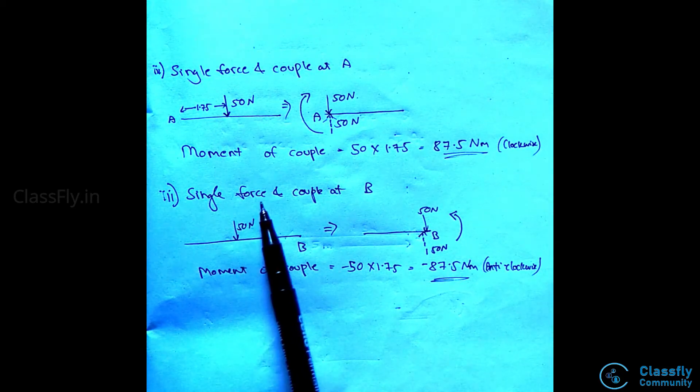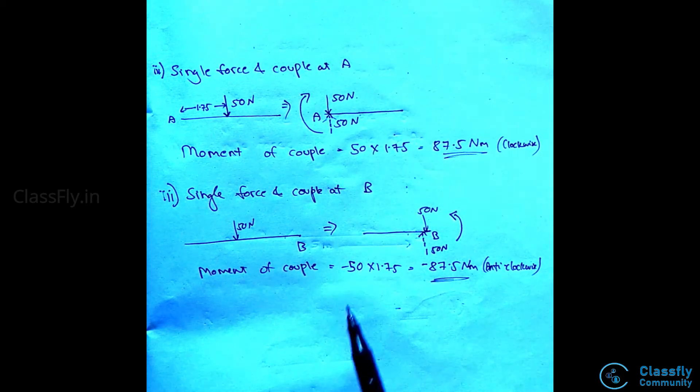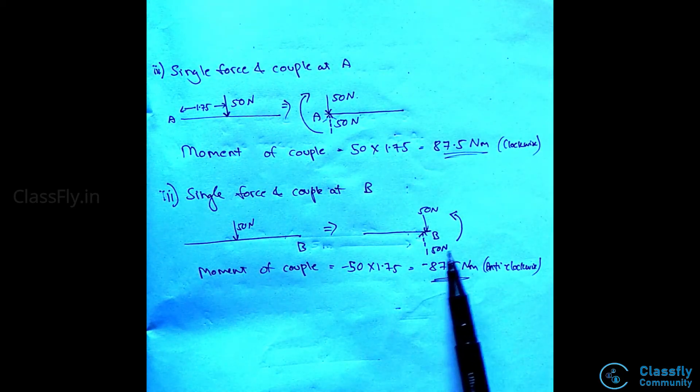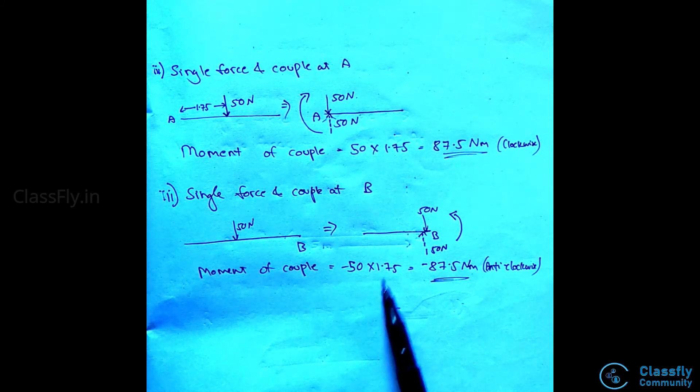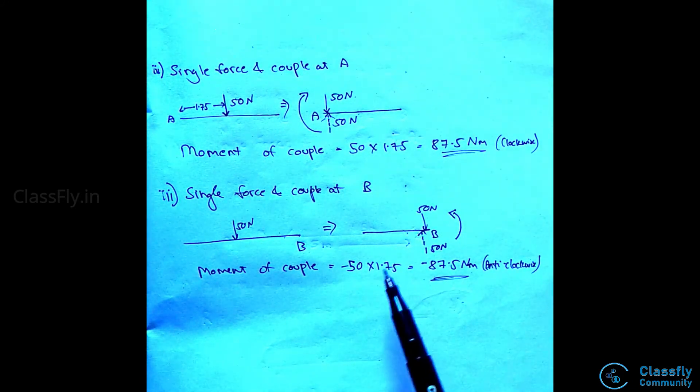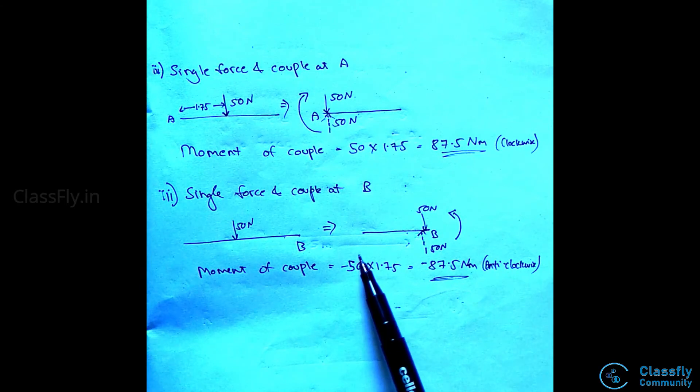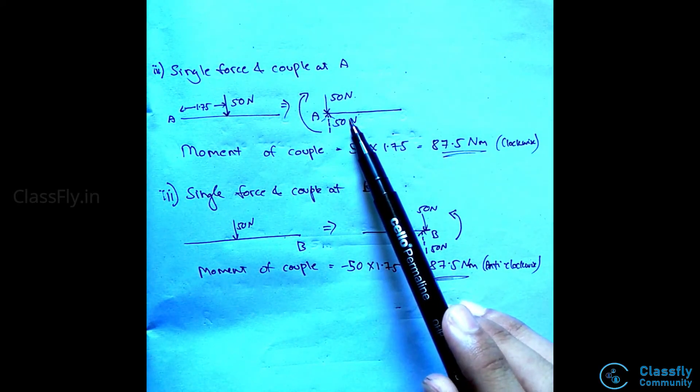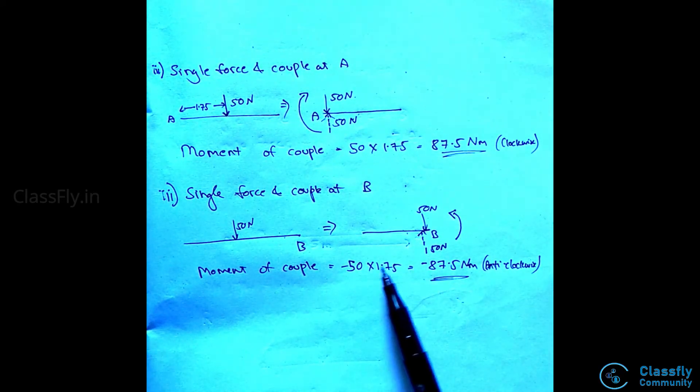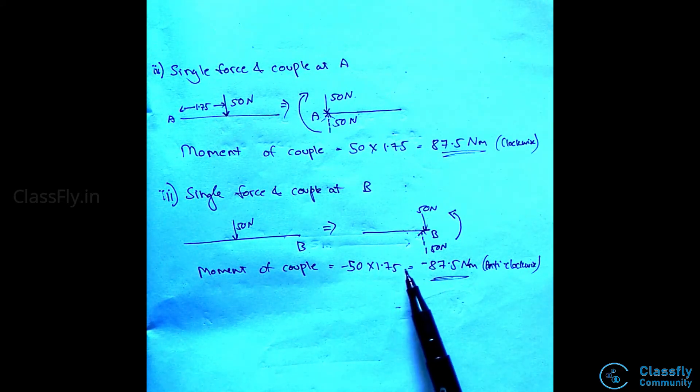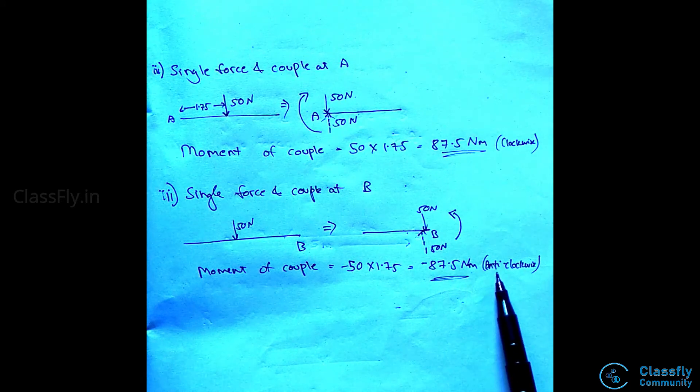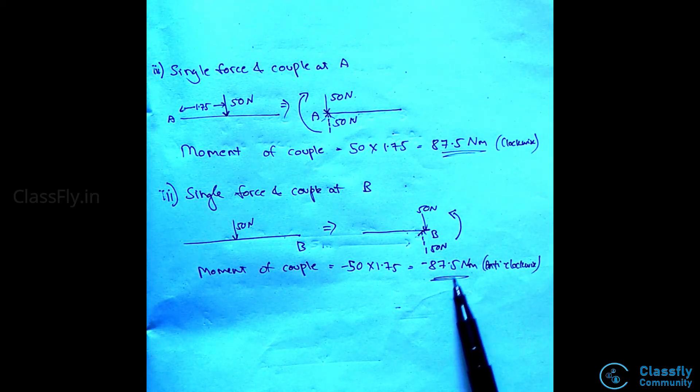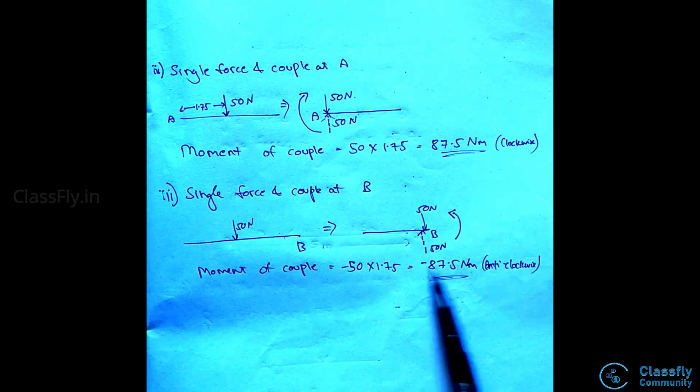Now, similarly, for single force and couple at B, the moment of the couple will be minus 50 into 1.75. Here, the couple force will be in the opposite direction from how it is acting on A. This will be minus 87.5 Newton meters, which means 87.5 Newton meters in the anti-clockwise direction.